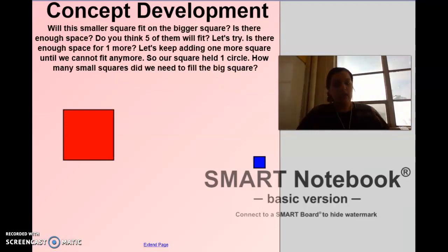Okay. Do we think the smaller square will fit in the bigger square? Yeah. Let's try it out to see if there's enough space. Is there enough space? Yes. Do you think five of them will fit? I see some yeses, I see some noes, and I see some maybes. So let's try it out.